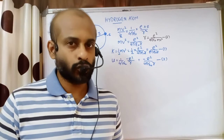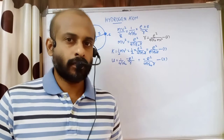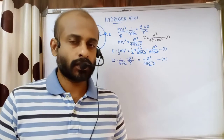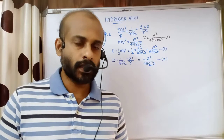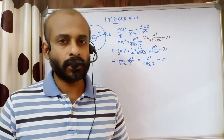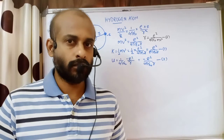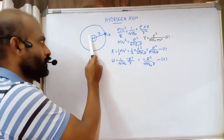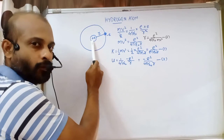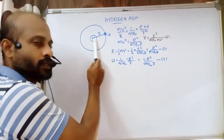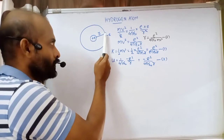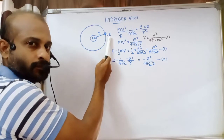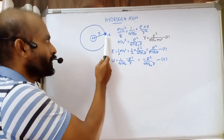The hydrogen atom is our topic today. The hydrogen atom contains one electron revolving in the orbit around the nucleus. The nucleus contains only one proton. We represent the hydrogen atom with a proton in the nucleus having positive charge plus e, and the electron revolving in the orbit with charge minus e.